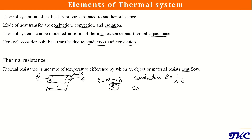For convection, r equals 1 divided by (a times h), where a is cross-sectional area and h is the coefficient of convection. In this way we can determine the thermal resistance, and based on that we can determine the heat flow rate.